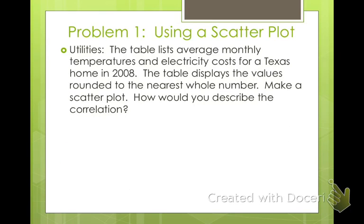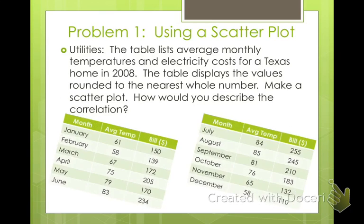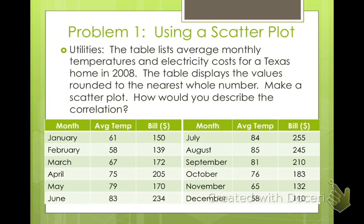So, utilities. I'm going to give you a table of data here. It shows the average monthly temperatures and electricity costs for a Texas home in 2008. The table has values rounded to the nearest whole number. We're going to make a scatter plot and then describe that correlation. I'm going to get a blank screen so we can plot our data.